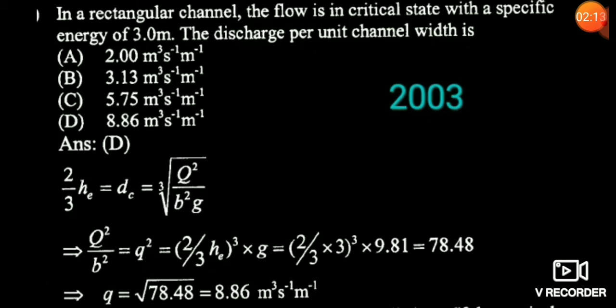Next question: In a rectangular channel the flow is in a critical state with a specific energy of 3 meters, and it is asking for the discharge per unit width. The specific energy HE is given as 3 meters. Using DC = 2/3 × HE and HE = cube root of (Q²/B²g), since it is asking for discharge per unit width (small q = Q/B), you put all the values and use this relationship. You will get the discharge per unit width as 8.86 m³/s per meter.